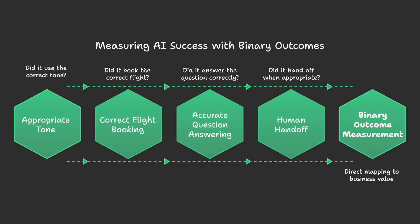Did it book the flight correctly? Did it answer the question correctly? Did it hand off to a human when it should? These are binary outcomes that map directly to business value. From my experience building AI products, I've learned to design custom binary pass-fail evaluations based on actual failure modes. Each evaluation should reflect a specific risk or requirement in your application. For example, a support bot might have separate checks for: does the reply address the question, is the format correct, does it produce valid JSON, and is the tone appropriate — is it polite and on-brand? Tracking pass-fail for each one yields actionable insights without over-complicating things.